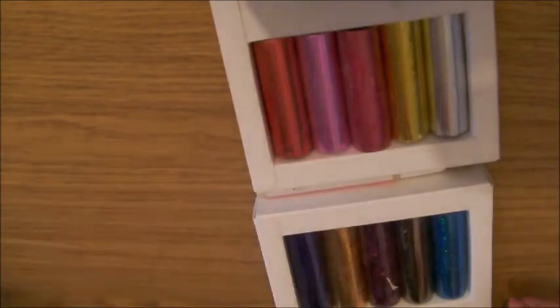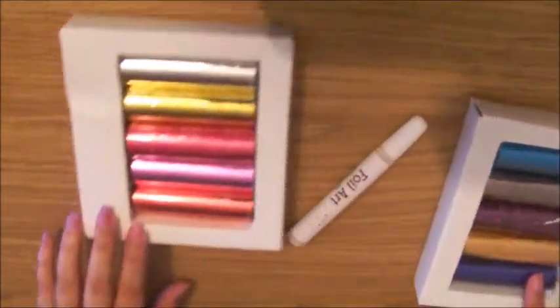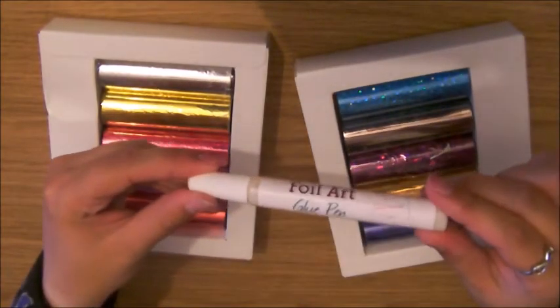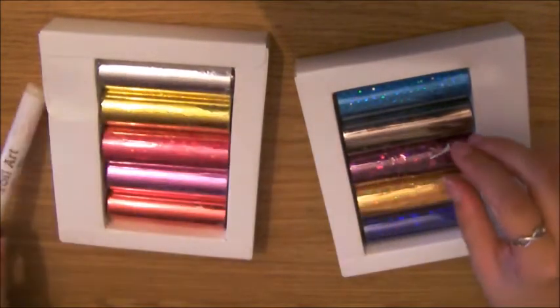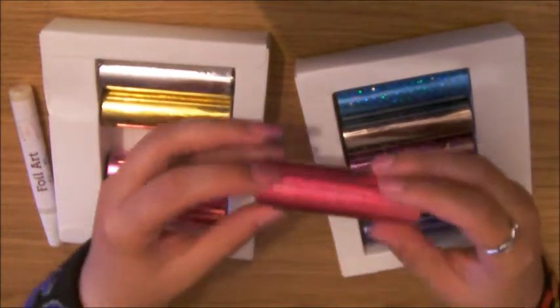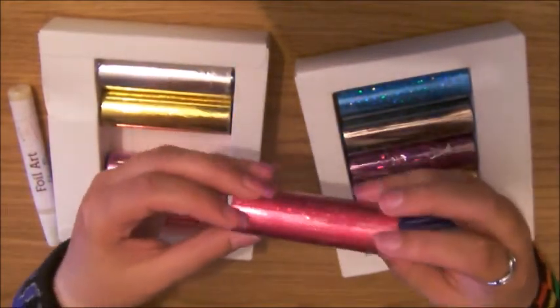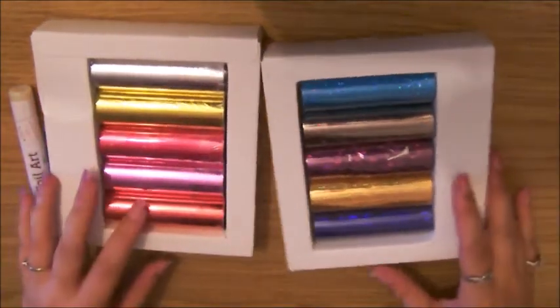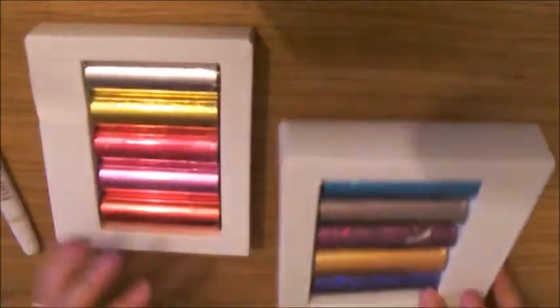From the instructions what you have to do is take the glue pen, draw on your design onto your paper or card, take the foil, place it on top once the glue has gone clear, and then just pull it off and the foil should stay on the page, hopefully.